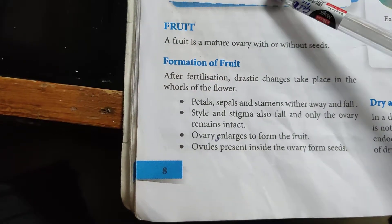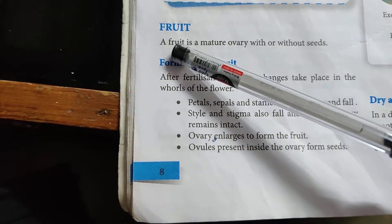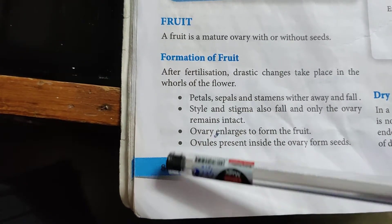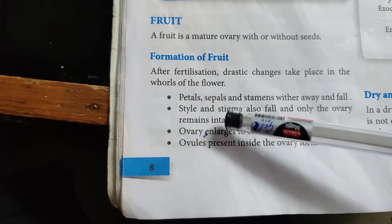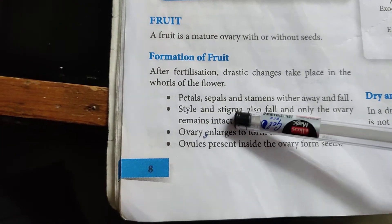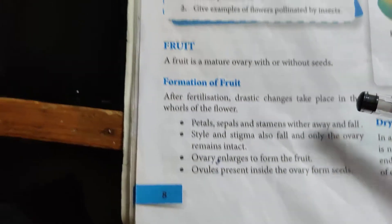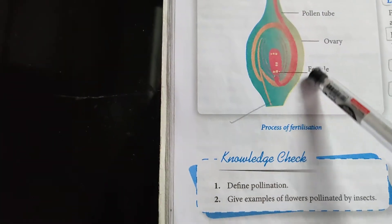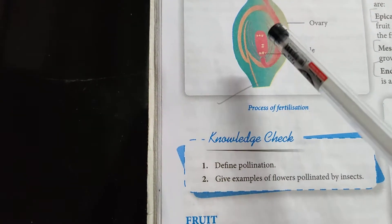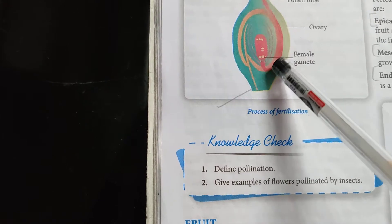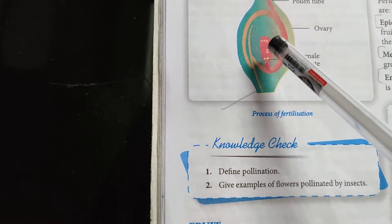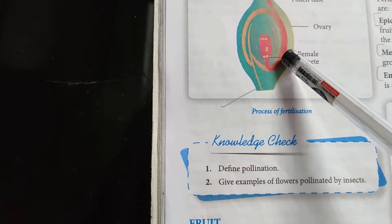Once fertilization takes place, a fruit is formed. After fertilization, the petals, sepals, and stamen all wither away and fall. Style and stigma also fall. Only the ovary remains intact. It enlarges, becomes fleshy, and forms the fruit of the plant. The ovules develop into seeds. So, the ovules form the seeds of the fruit.